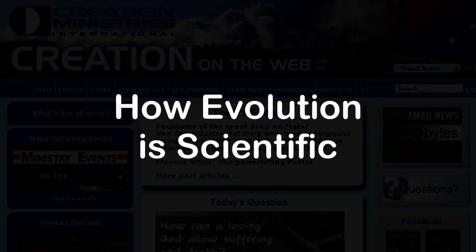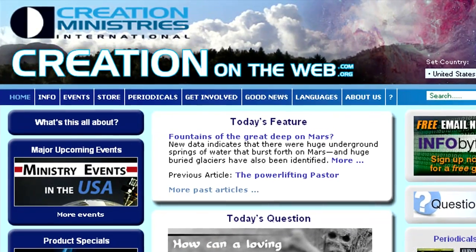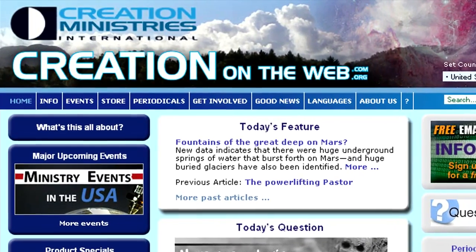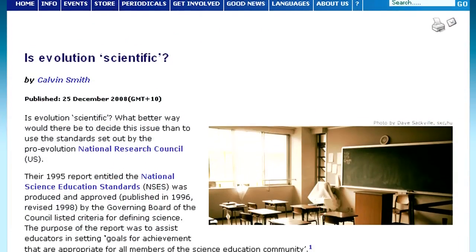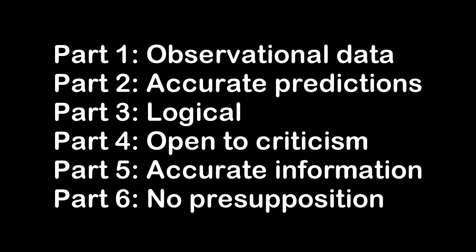Welcome to Part 2 of this series, rebutting the Answers in Genesis article claiming that evolution is not scientific. Part 2 covers their second claim, that evolution makes no accurate predictions.